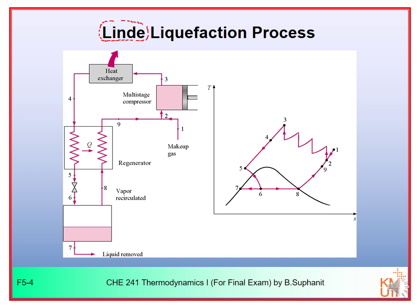In the Linde process, we have a compressor (possibly multi-stage), a cooler, and then the gas flows through a regenerator. This regenerator further reduces the temperature of your gas by exchanging heat with the cold vapor from the flash drum. After exchanging heat inside the regenerator, the cold vapor is returned to the feed point, mixed with makeup gas, and returned to the compressor again.